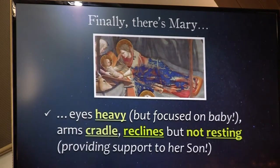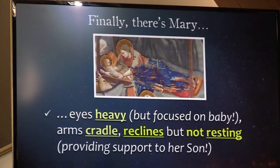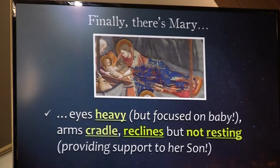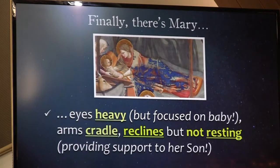And finally, there's Mary. Mary's eyes are heavy — as we look really closely, you can barely see that she has her eyes open. This is a woman who is absolutely wiped out from everything she has experienced. And yet her eyes — the slits that are there — are focused entirely on her baby. What's interesting about the way Giotto paints her is that her arms cradle Jesus and she's in a reclining position. And yet the way her arms cradle Jesus doesn't allow her to rest. This is not a position of rest for Mary. She is entirely concerned about the baby she has just born, cradling him and supporting him at the expense of her own comfort.